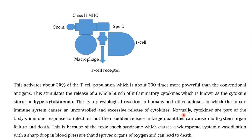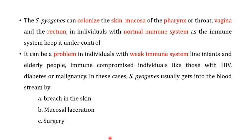These cytokines are normally part of the body's immune response to infection, but when suddenly released in large quantities they can cause multi-system organ failure and death. This occurs because the cytokine storm drives a phenomenon known as toxic shock syndrome — a widespread systemic vasodilation with a sharp drop in blood pressure that deprives different organs of oxygen, leading to multi-system organ failure and death.